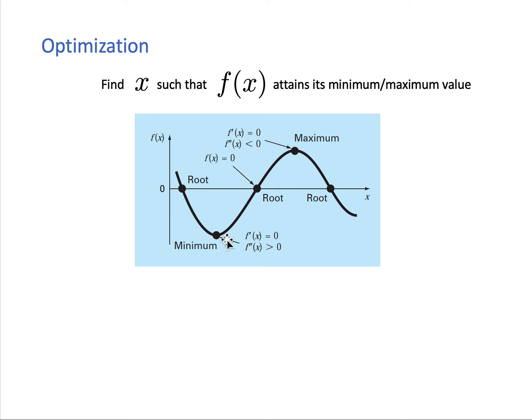Here we have a minimum of this function and here is a maximum — that's different from the roots of the function. To decide whether a point is a minimum or maximum, we look at the second derivative. The second derivative implies curvature: if it's negative, the parabola points down and the point is a maximum; if it's positive, the parabola points up and the extremum is a minimum.